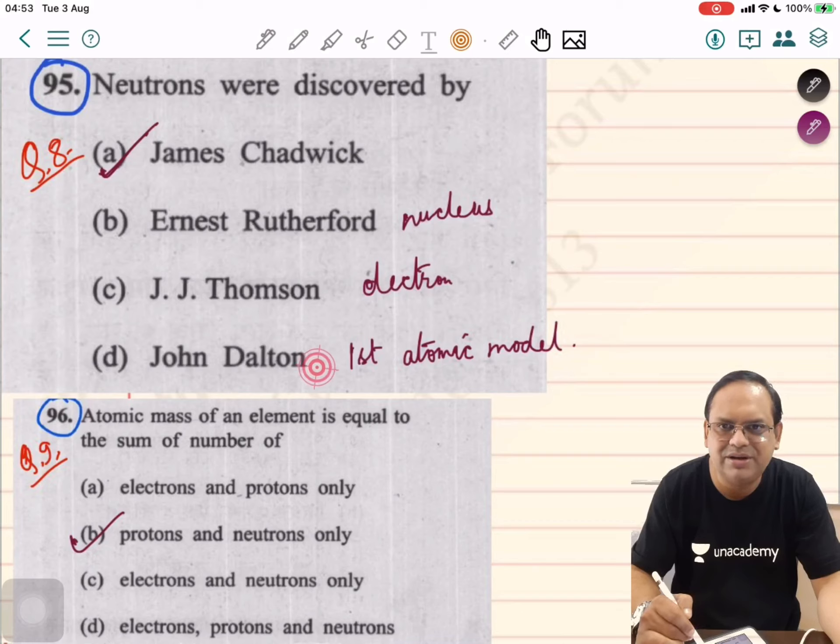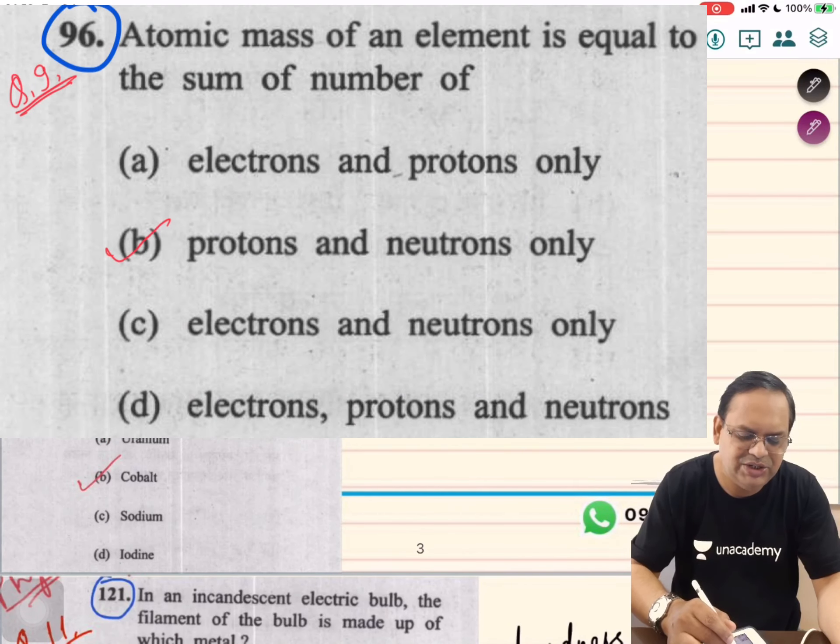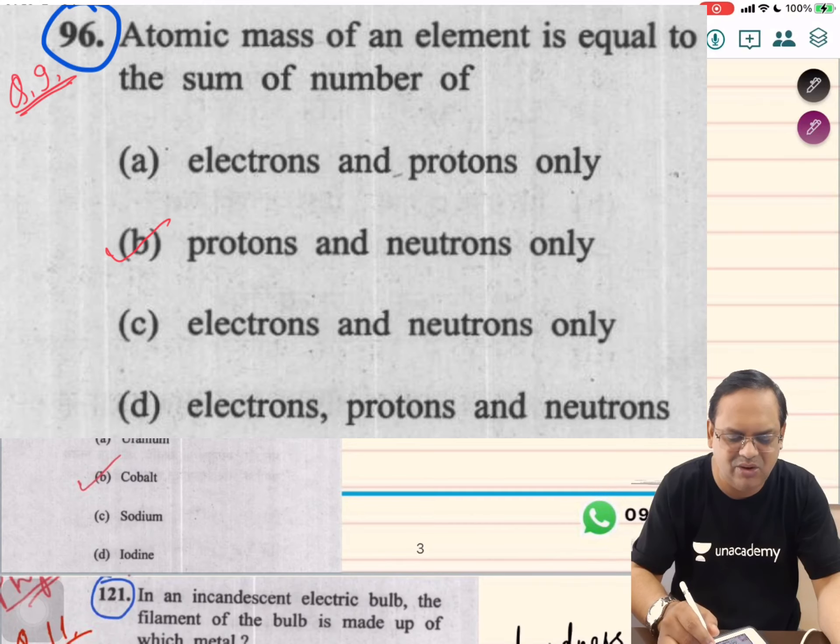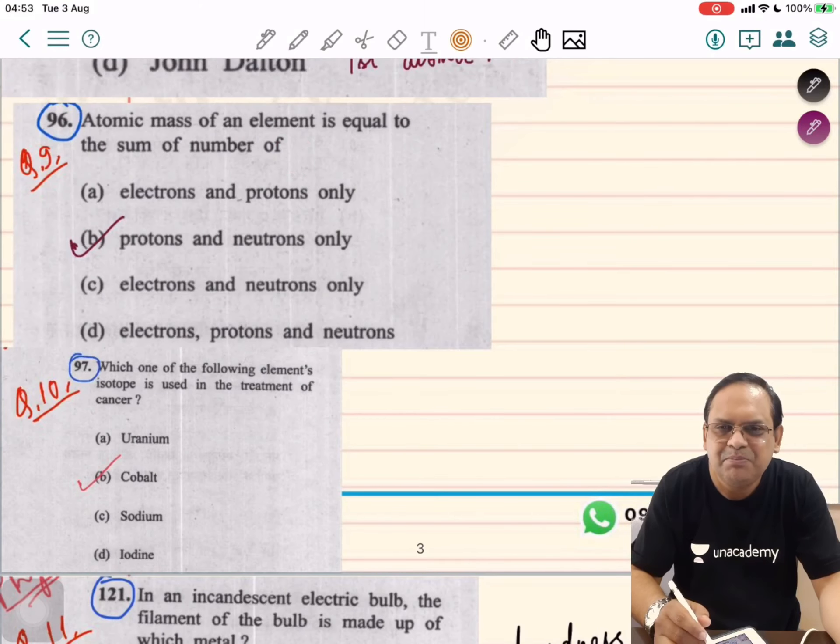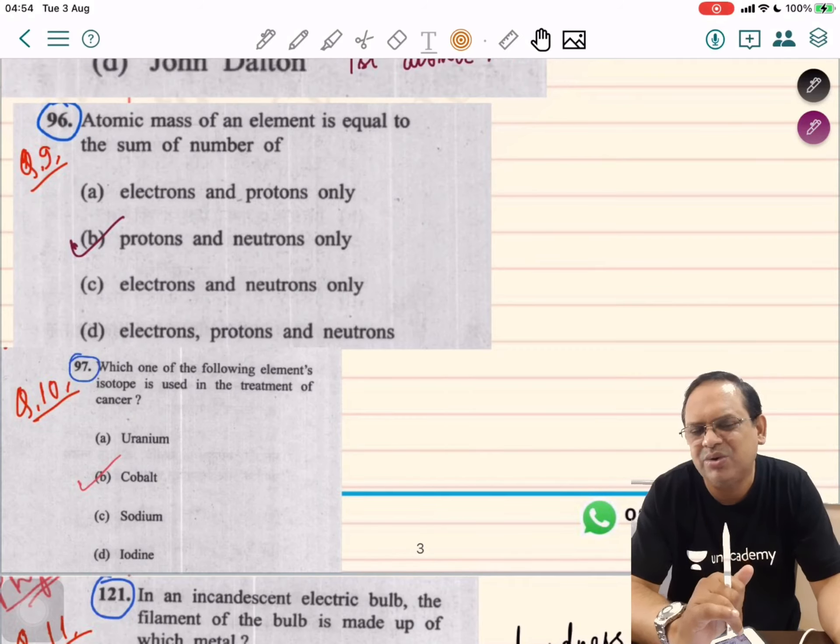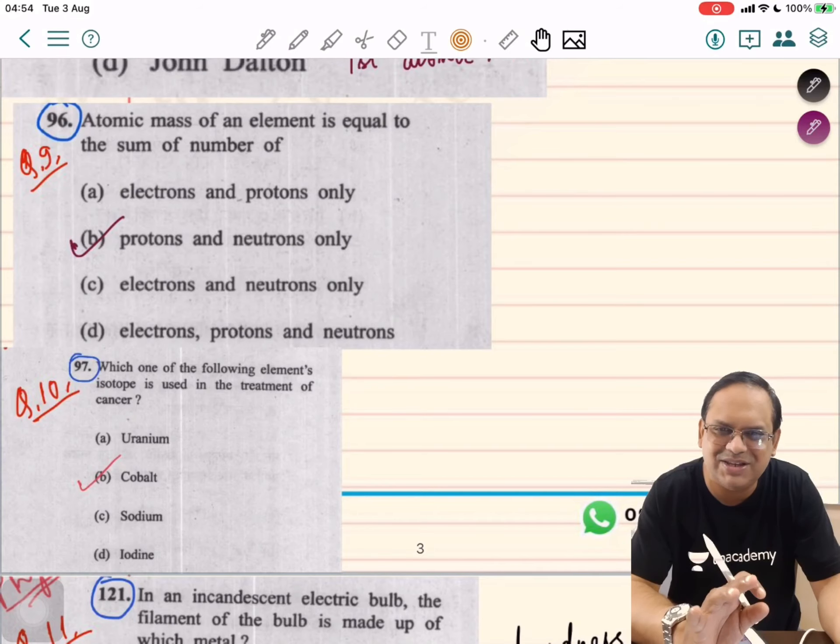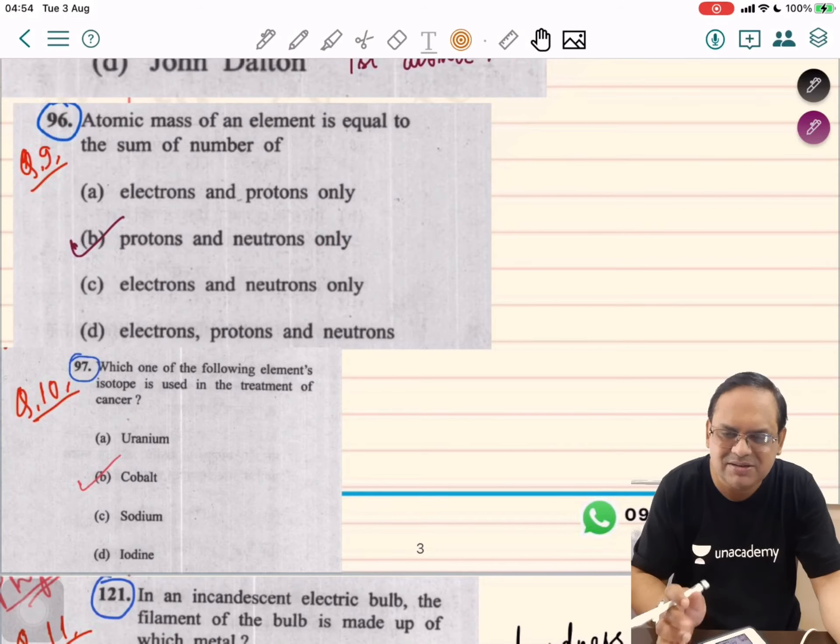John Dalton gave the first picture of atomic model in the science community. Atomic mass of an element is equal to the sum of number of protons and neutrons only. If you talk about electrons, there is absolute mass but relative mass is zero. Mass is just protons and neutrons, not electrons. Hence option B is correct.